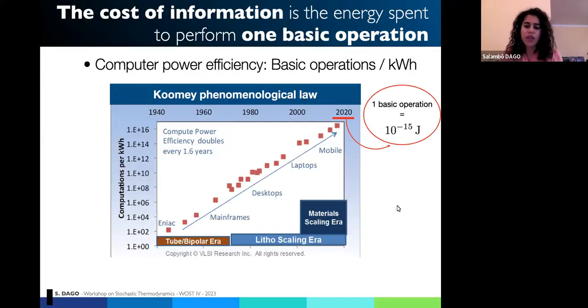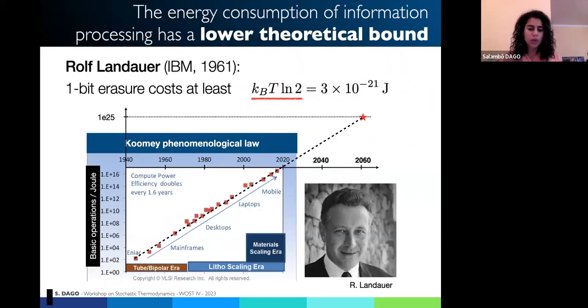Let's start by something I think you all know, but I would like to start from the basics, which is the cost of information. I will define it as the energy spent to perform one basic operation. If you look at this phenomenon, this law called the Koomey law, it's a bit similar to Moore's law. It's stating that regarding the advances we made in technology, we are able to roughly double the efficiency of our computers every one year and a half, meaning that we are able to perform more and more basic operations for the same amount of energy.